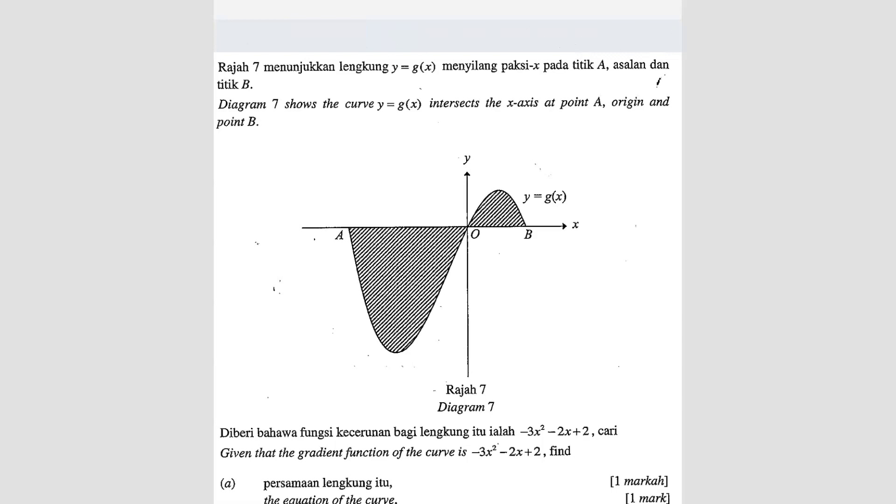Question number 9. Diagram 7 shows a curve y equals gx intersects the x-axis at point A, origin and point B.